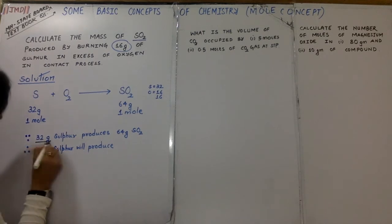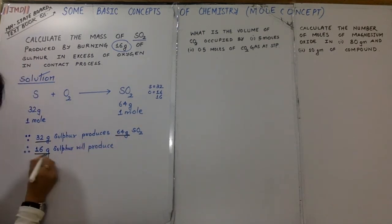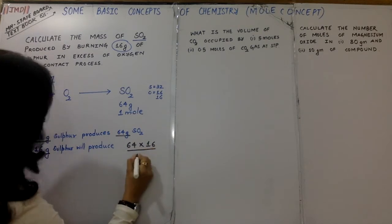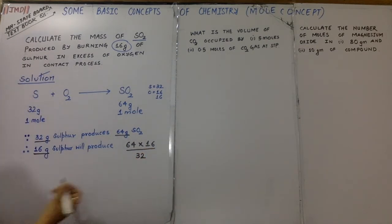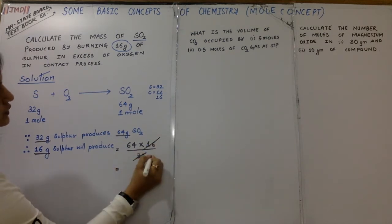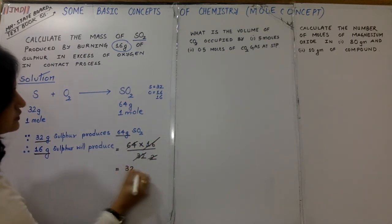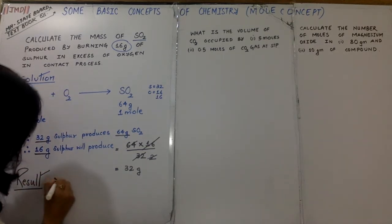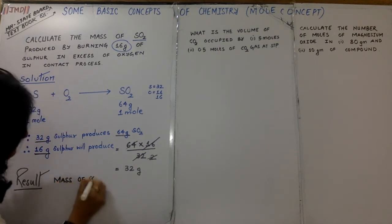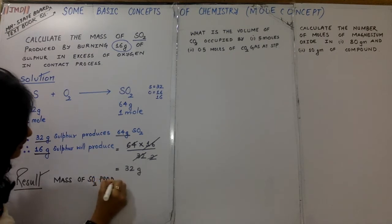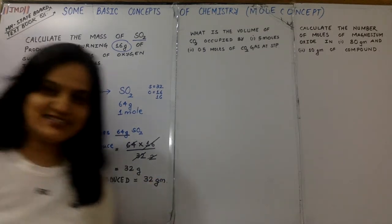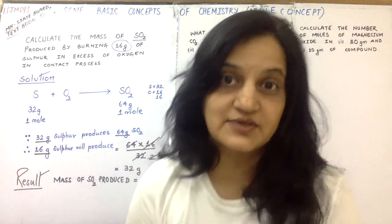So 64 into 16 cross multiply upon 32. You can solve this, so that gives us 32 grams. That doesn't complete the answer if you write the result. Because it's a theory paper, the result you'll be writing is: mass of sulfur dioxide produced equals 32 grams. So that's complete solution, the way we are supposed to write it in our theory exams.